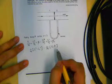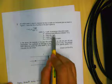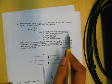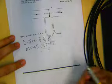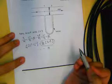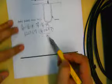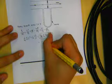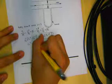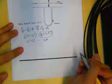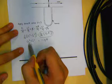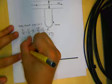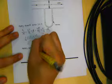Rearranging velocities to one side: (1 over 2G)(C1 squared minus C2 squared) equals (1 over rho G)(P2 minus P1). H is defined as the pressure difference between 1 and 2, so this term equals negative H. Bringing 2G across: C1 squared minus C2 squared equals negative 2G H.